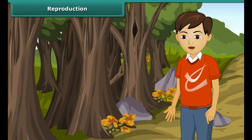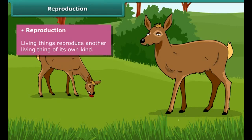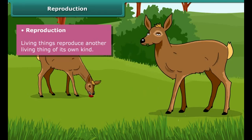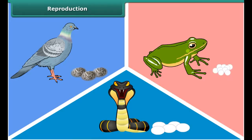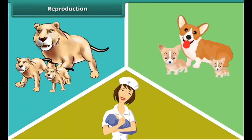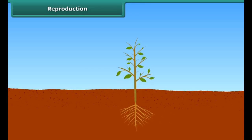A very important characteristic of living things is reproduction. All living things have the ability to reproduce another living thing of their own kind. Animals like pigeons, snakes, and frogs lay eggs, while animals like lions, dogs, and humans give birth to young ones. Plants reproduce through seeds or other parts of the plant.